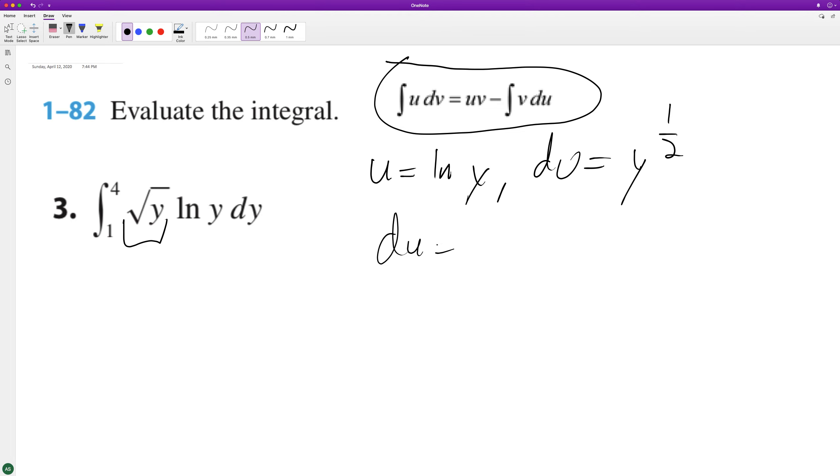So then DU is gonna be equal to one over Y. That's a derivative of the natural log Y. And V is equal to the integral of the square root of Y or Y raised to the one half, DY. So that gives us two thirds Y raised to the three halves.